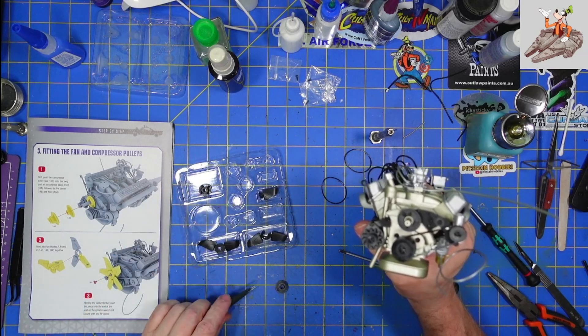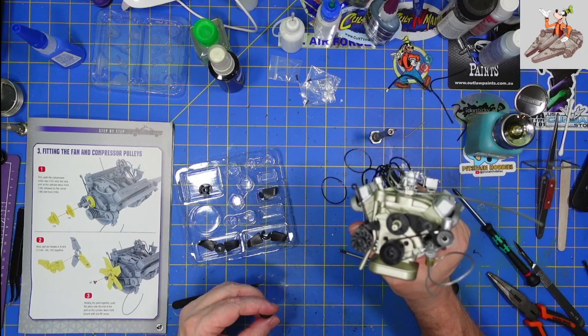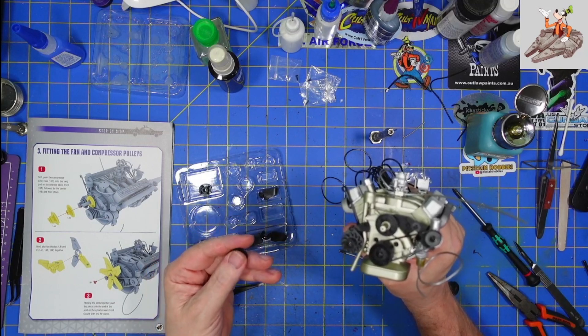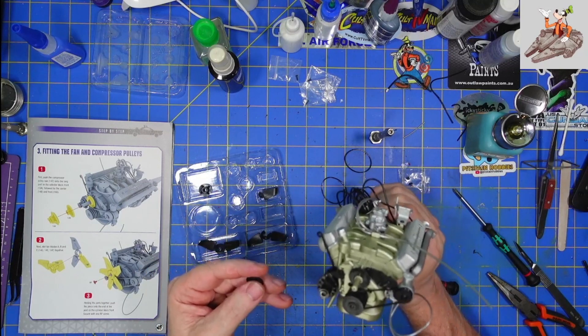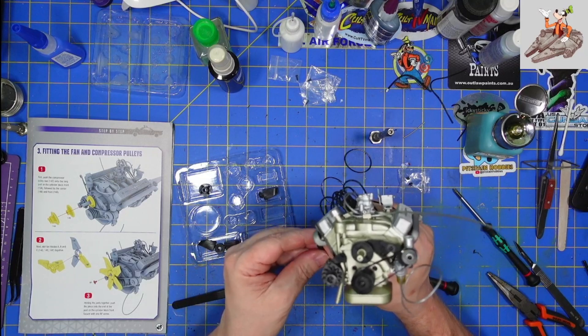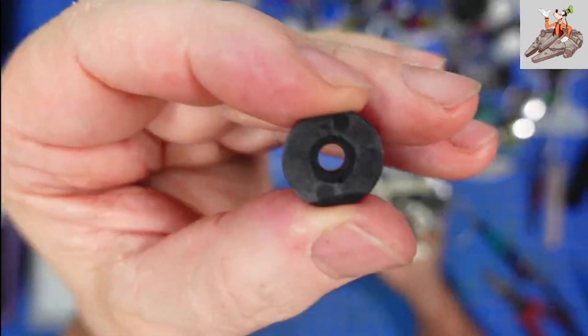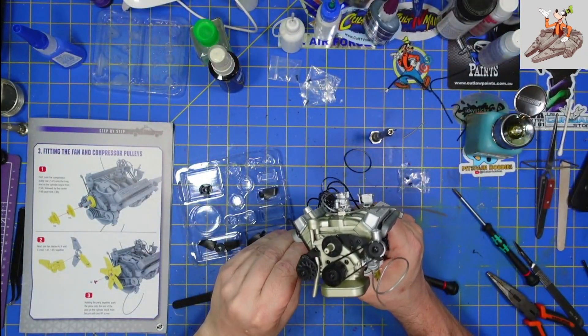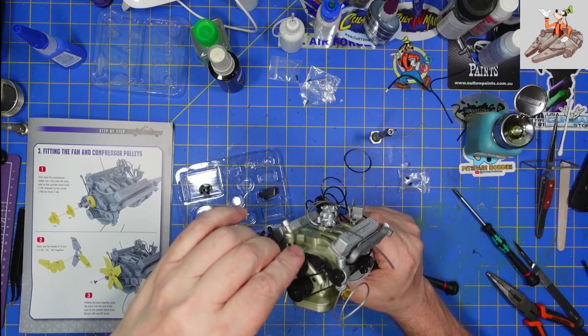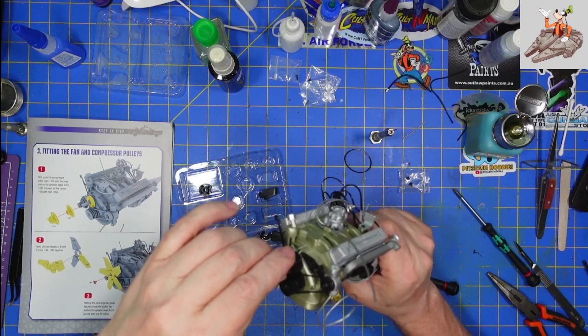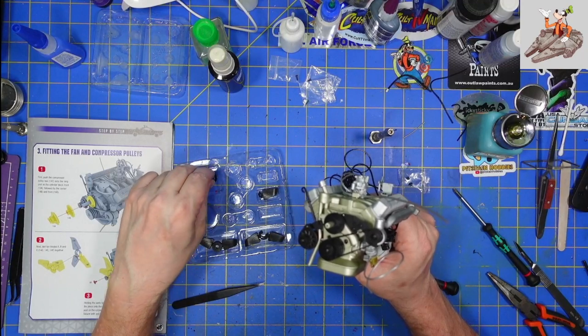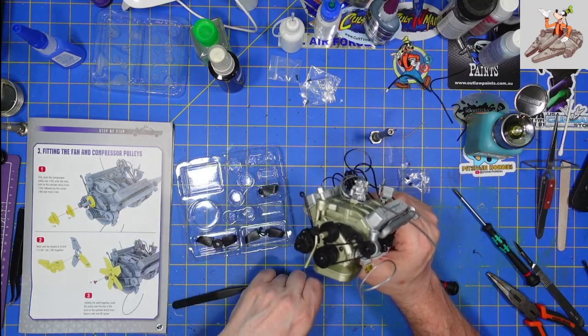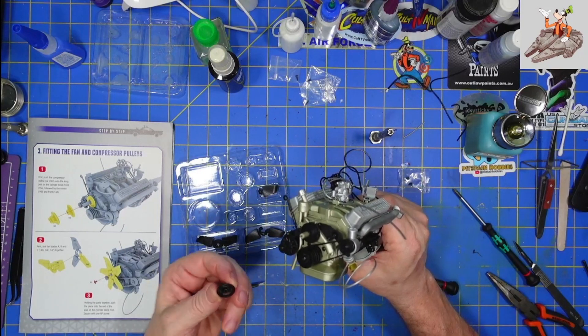And then we're going to take 14B. Now, let's see. Does it have... Now, it does not say anything about there being numbers or anything else. However... Oh, let's see. This one. Okay, these have both got a two on them. And those tabs should fit into the front of that pulley. They do. And then we're going to take 14A. Which does not have any numbers on it. And we're going to push it on the front of here.